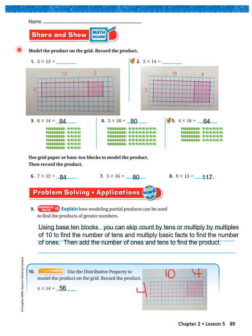Alright, let's see how you did. It says model the product on the grid and record the product. 3 times 13 would be 3 down, 13 across broken up into 10 and 3. The answer is 39. I'm sorry boys and girls, let me do that right now. The answer is 39. Alright, let's look at number 2. The answer is 70. 5 times 14, 5 down, 14 across broken up into 10 and 4. Your answer is 70.